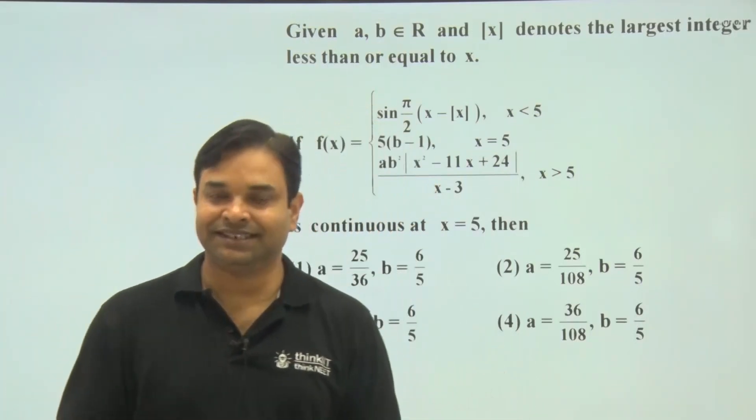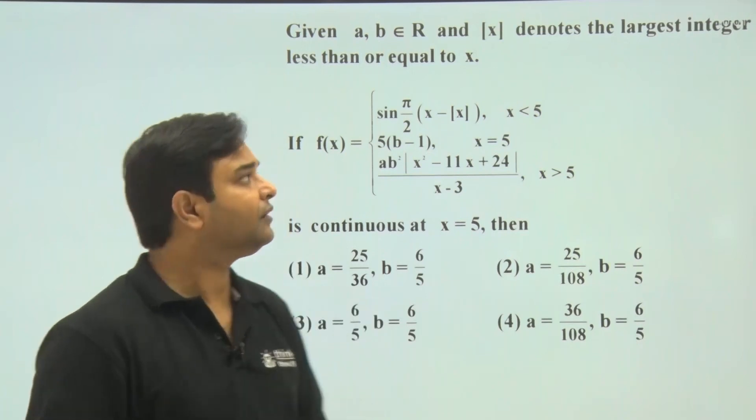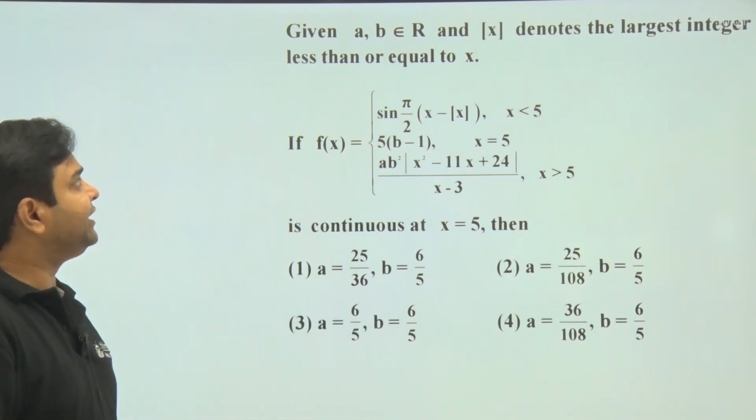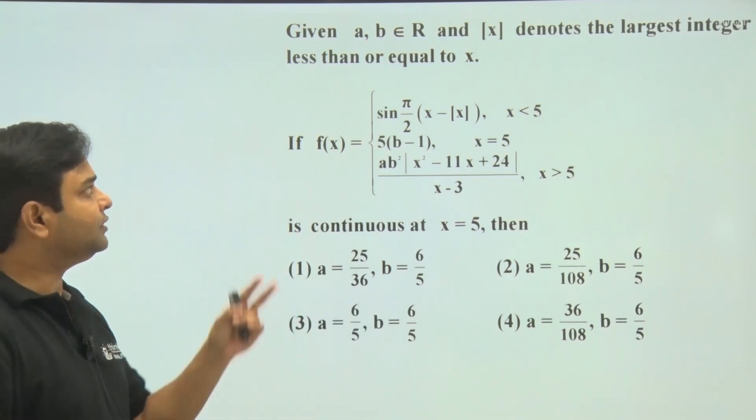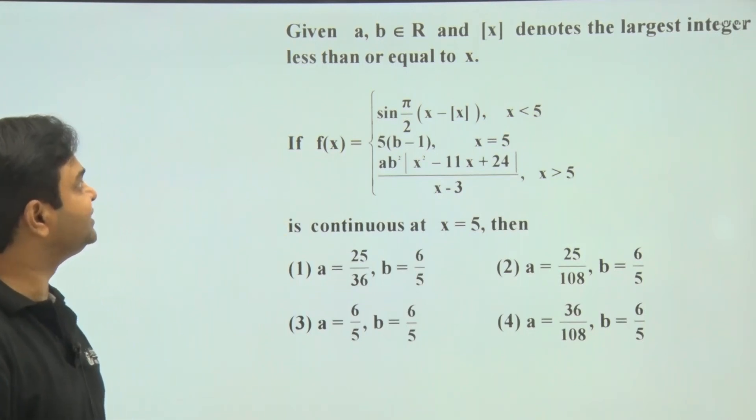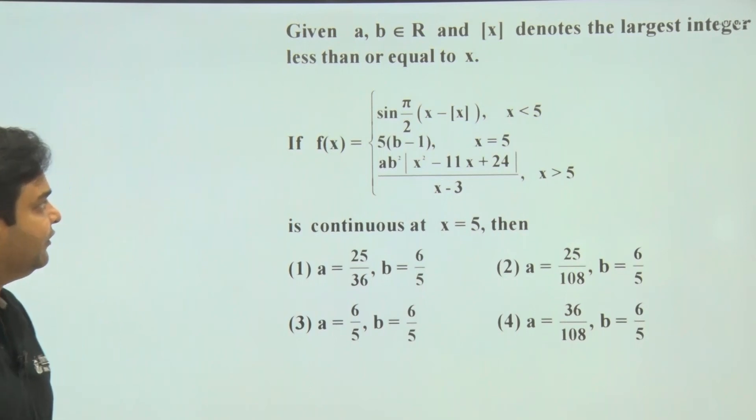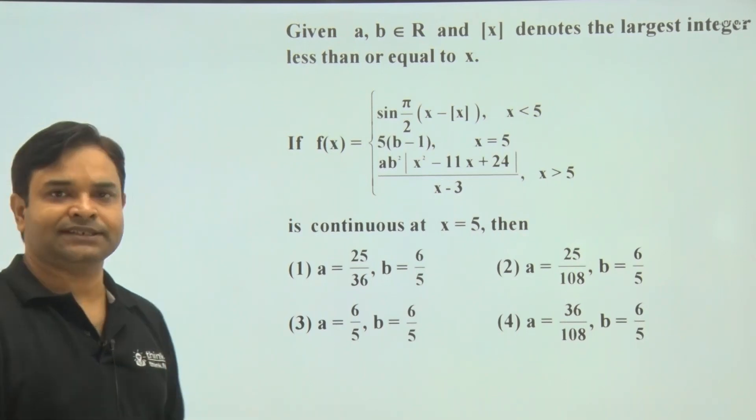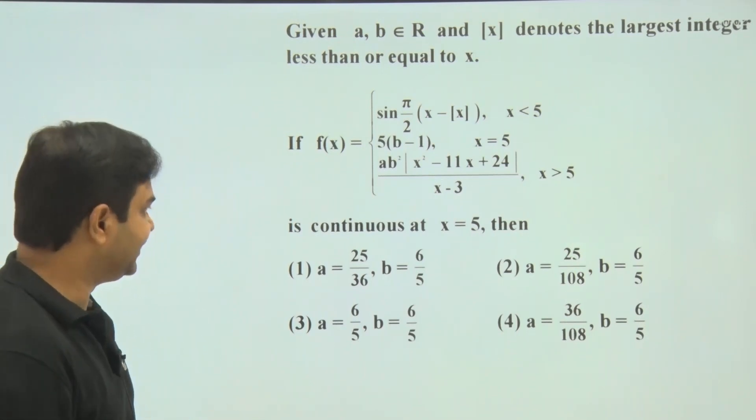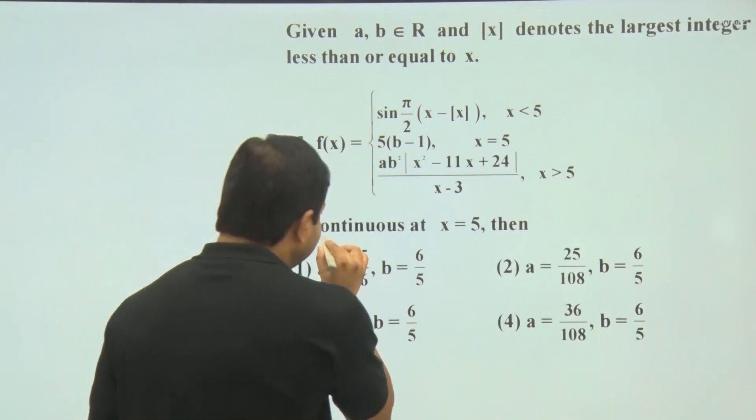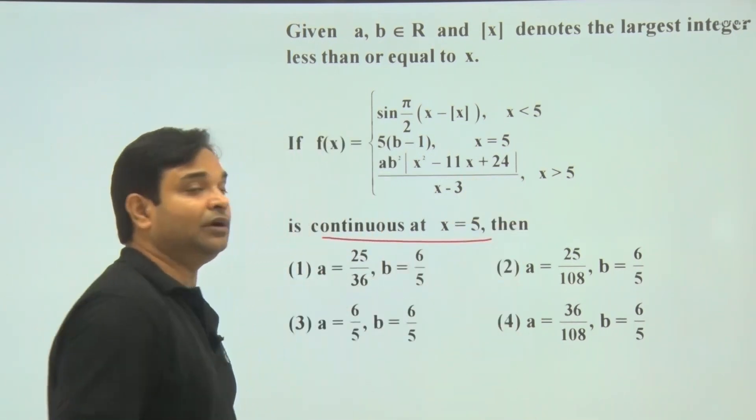Hello students, let's discuss our next question. The question is: a and b belong to real numbers, [x] denotes the greatest integer less than or equal to x, and there is a piecewise function defined for x less than 5, x equal to 5, and x greater than 5. This function is continuous at x equals 5.